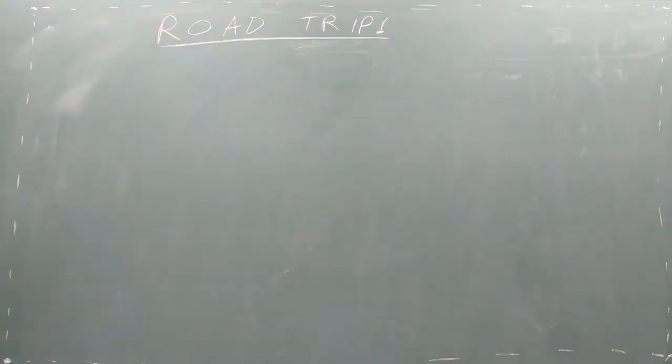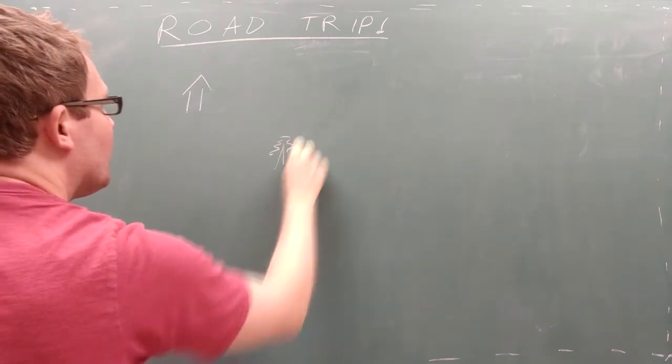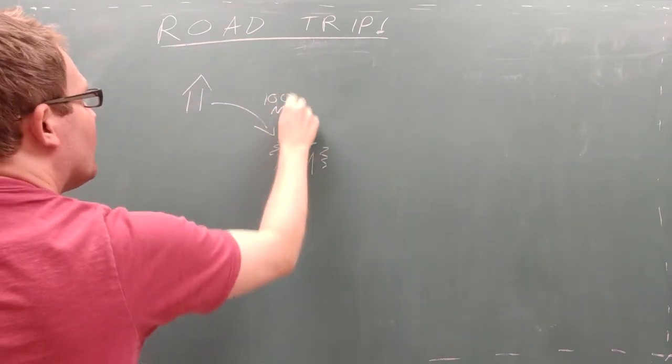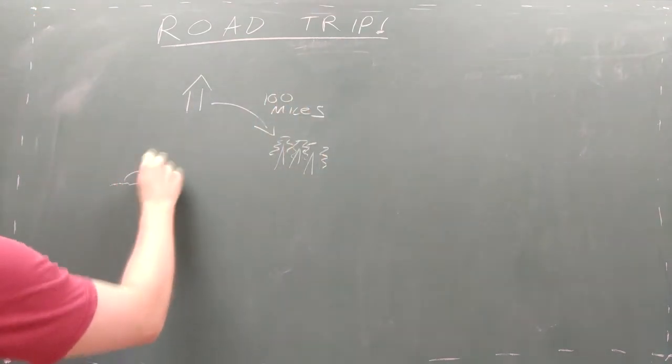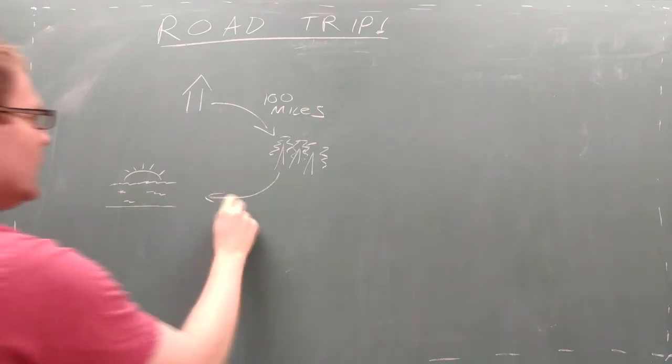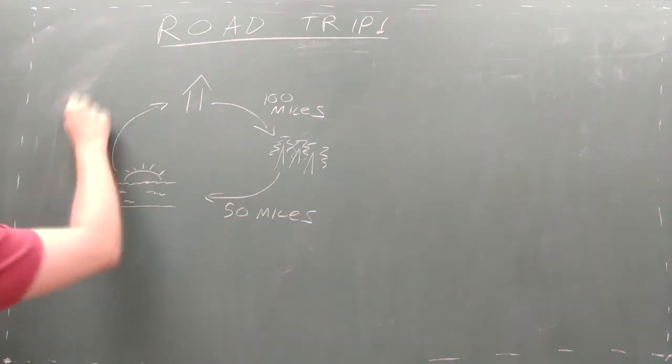Imagine you're going on a road trip. You drive your car 100 miles from your house to your first destination. Then you drive 50 miles to a second destination. And then you drive 120 miles to return home.